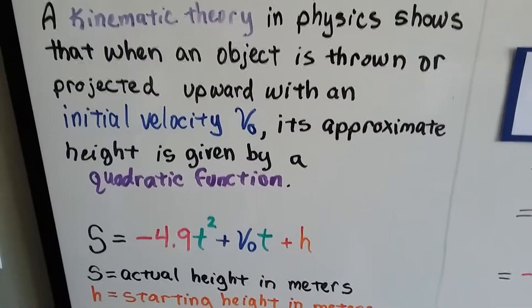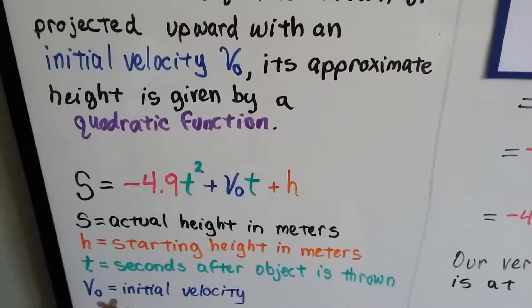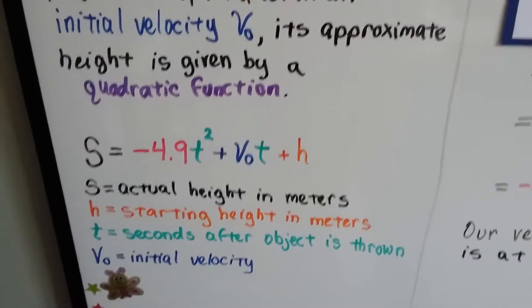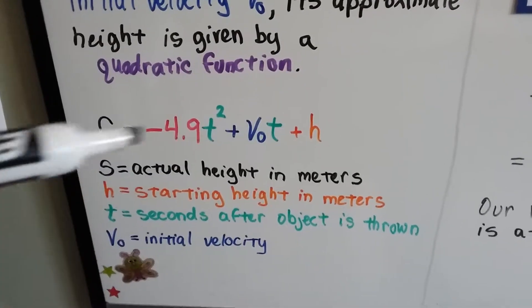A kinematic theory in physics shows that when an object is thrown or projected upward with an initial velocity, that's v sub zero, its approximate height is given by a quadratic function. We're going to use this formula for meters.